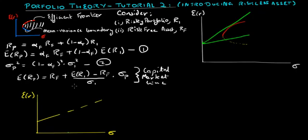The slope of the capital market line is what's called the Sharpe Ratio. The Sharpe Ratio essentially measures the excess return on the portfolio over and above the risk-free rate divided by the volatility. So for each unit of risk you're taking, what is the excess return that you're earning on this particular portfolio? That's measured by the Sharpe Ratio.